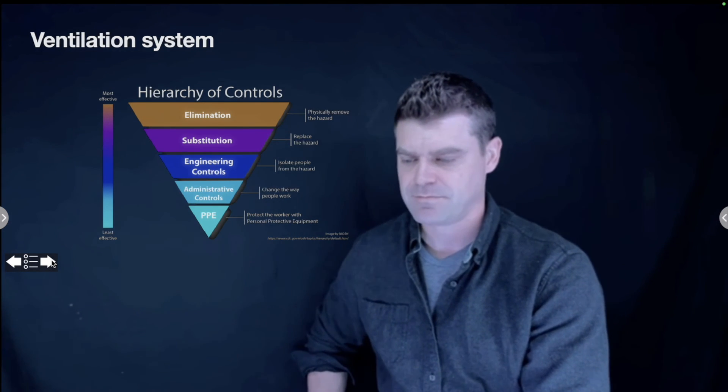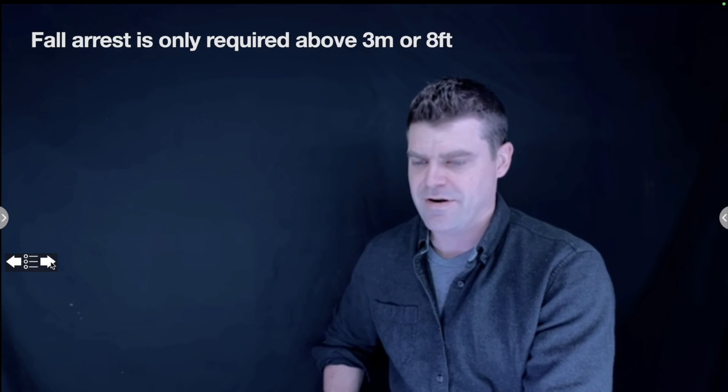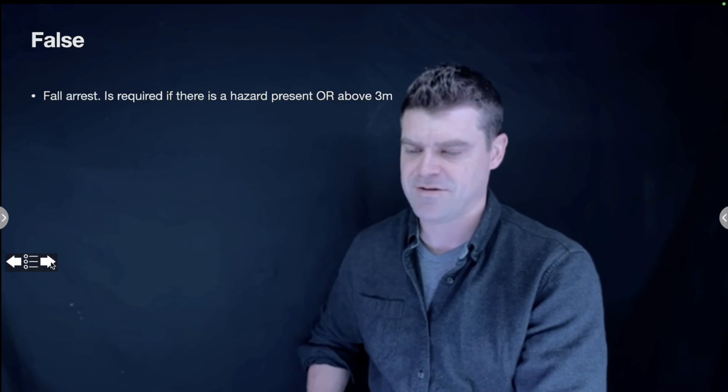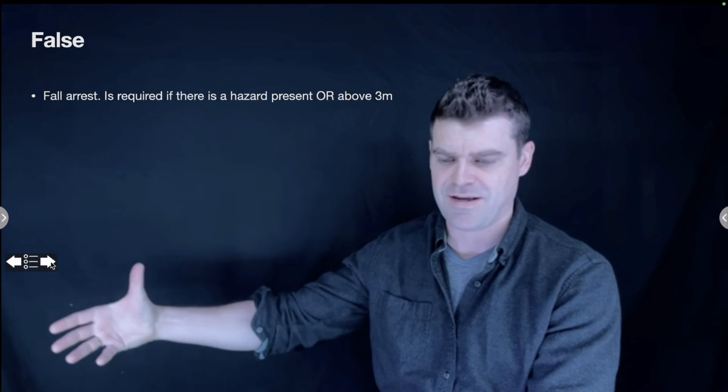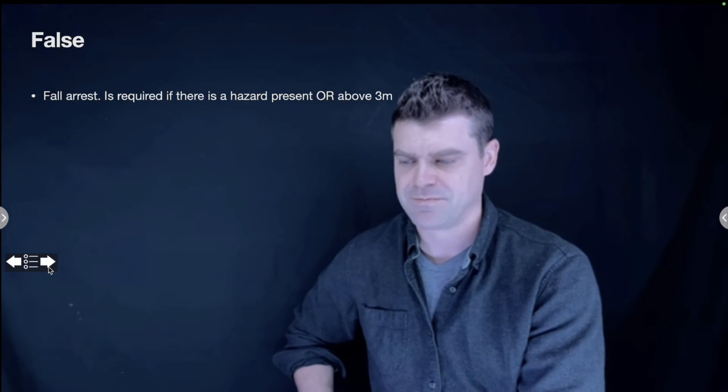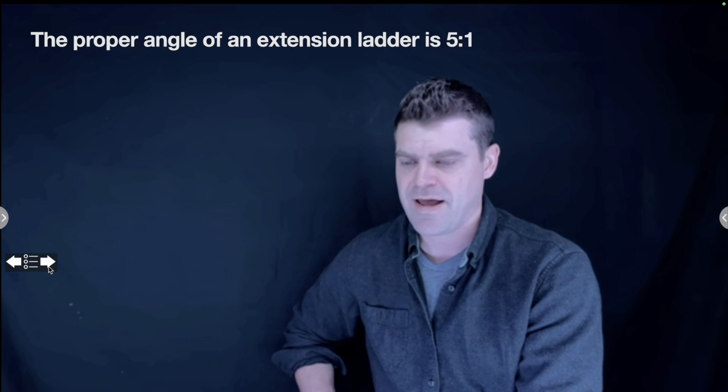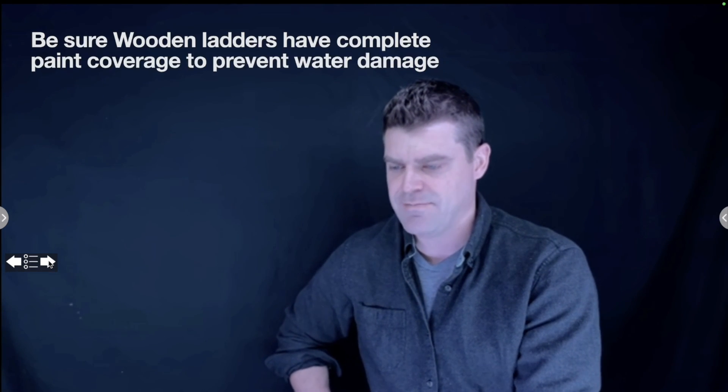All right, time for lightning round. I've got a bunch of true or false questions here on ladder safety or access equipment. Fall arrest is only required above three meters or eight feet. False. Fall arrest is required if there is a hazard present or above three meters. If you could fall off something onto something dangerous, something spiky, something that's a hazard, then you need fall arrest. Never work or step on the top two rungs of a ladder. True. The proper angle of an extension ladder is five to one. False, it's four to one. Fiberglass ladders are electrically non-conductive. True.